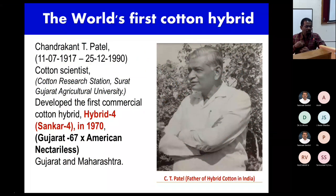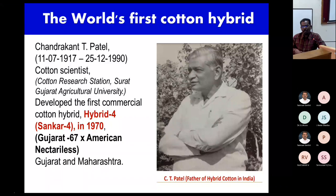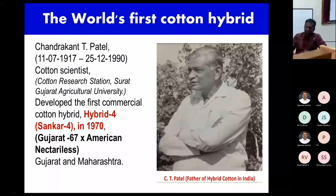C.T. Patel, the father of hybrid technology from Agriyacha University's cotton research station in Surat, was the first person to develop a cotton hybrid — Shankar 4 (H4) in 1970. He crossed Gujarat 67 variety with American Nectarilis and this became a revolution in heterosis breeding. The private industry has completely taken over cotton through the hybrid program, and these two states initially started cultivating cotton hybrids.